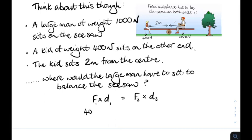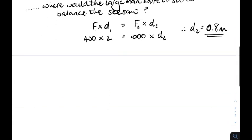F1 D1 equals F2 D2. So there's the kid. And there's the large man. And by a little bit of algebra, we can work out the distance he would be at would be 0.8 metres. The force times the distance is the same on each side.